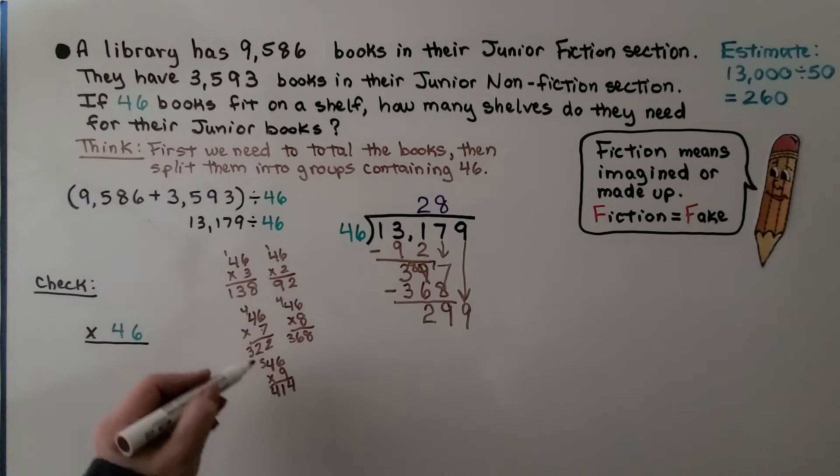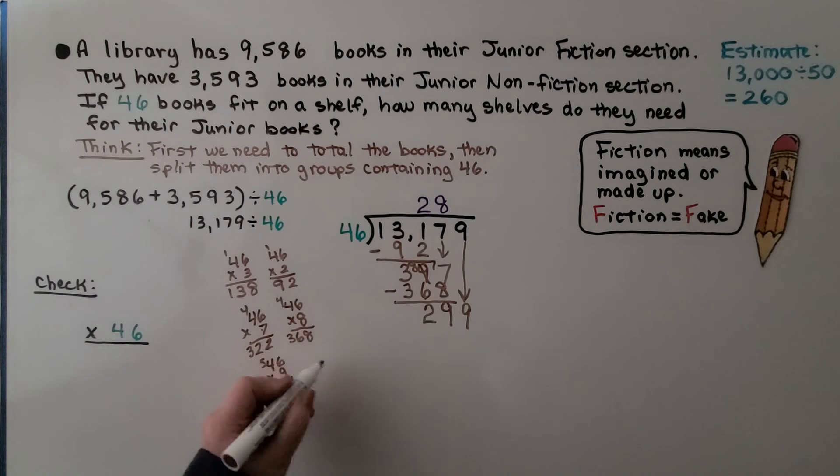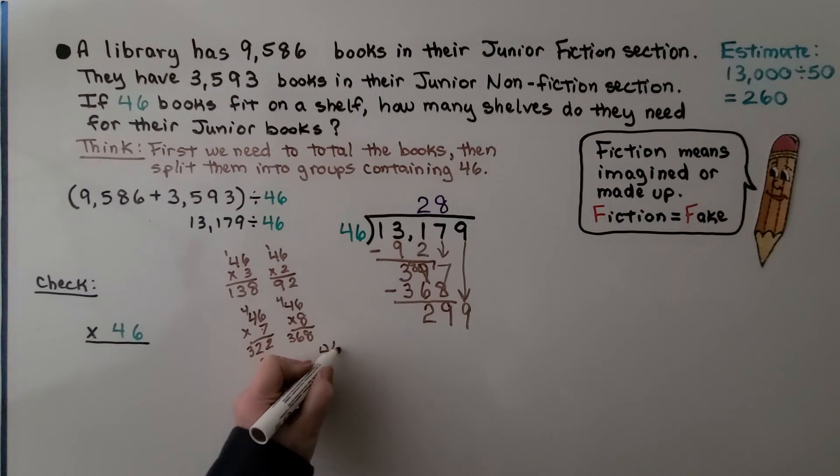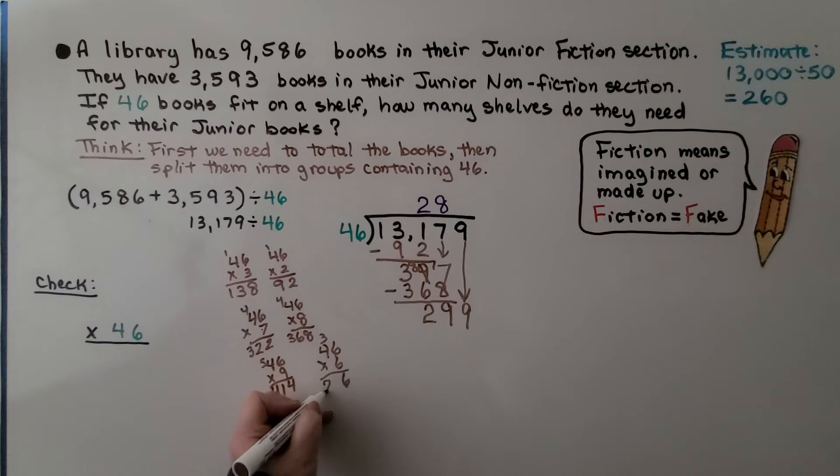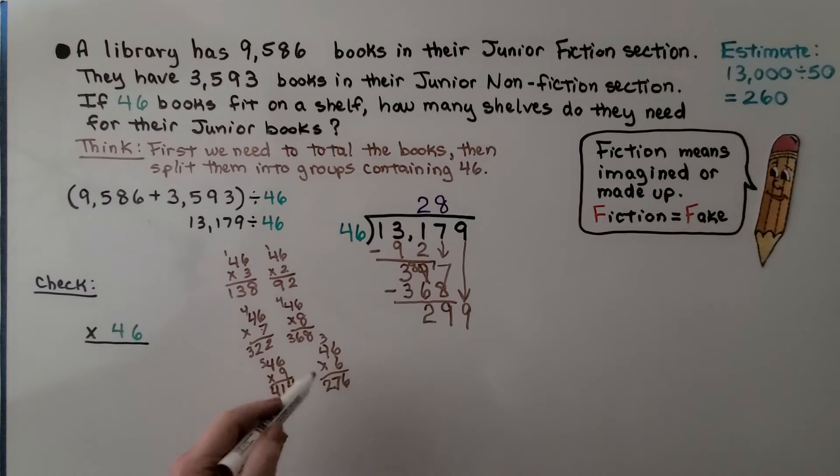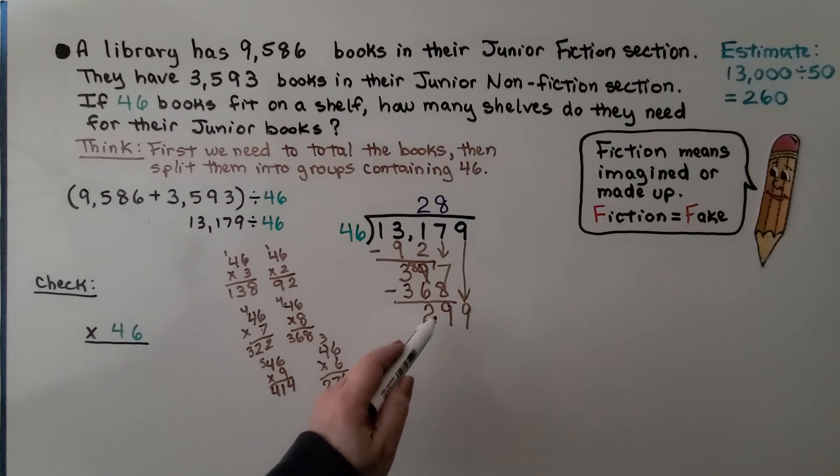And we haven't done 6 yet. Let's try 46 times 6. 6 times 6 is 36. 6 times 4 is 24. 25, 26, 27. That looks like a good number. It's less than 299. It doesn't go over it like 46 times 7 does.